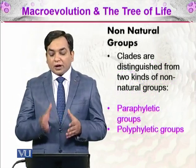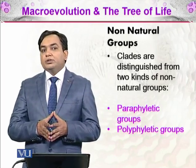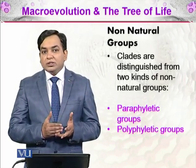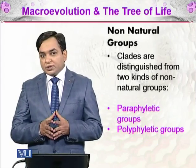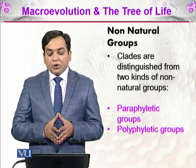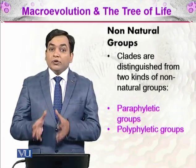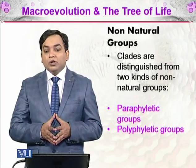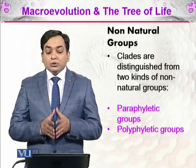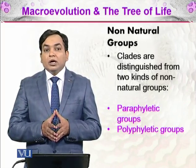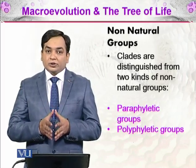There are also some non-natural groups called paraphyletic groups. For example, reptiles also give rise to aves — birds — and mammals, so they branch into other organisms as well, making them paraphyletic. There are also polyphyletic groups — organisms with multiple origins where we are not sure where to place them in the tree of life. Poly means many and phylactic means origins. This concludes macroevolution and the tree of life; we will continue discussing cladistics in the next lecture.